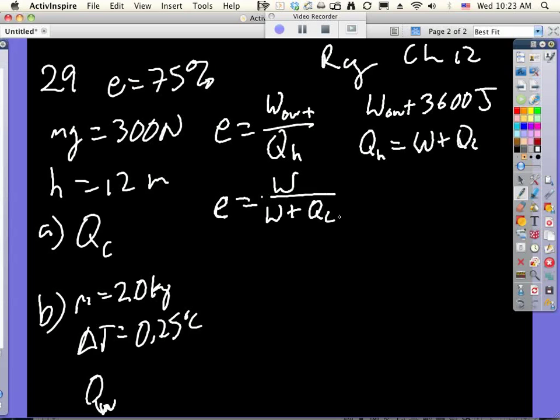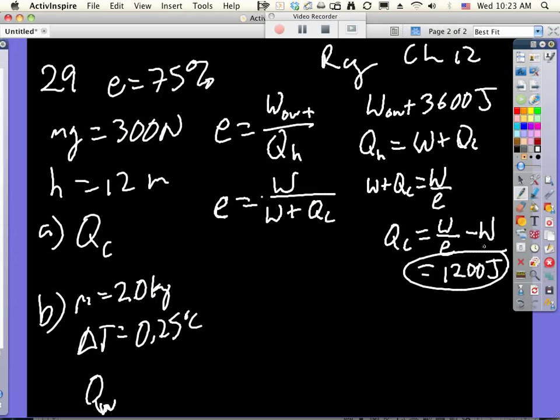And now I can say work plus QC equals work over efficiency. QC is equal to work over efficiency minus the work. So we take the work, 3600 divided by three-fourths, which makes four-thirds, and then that's going to make 4800 minus 3600, and we should get 1200 joules. Double check my math though.